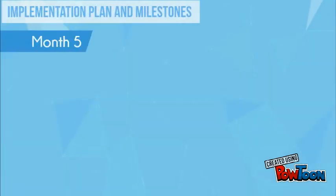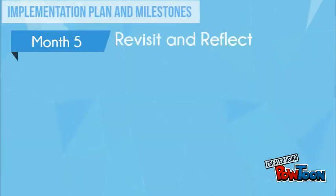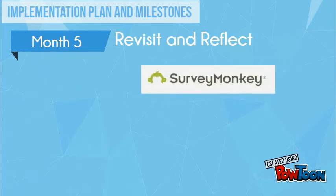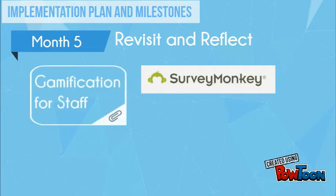In the fifth month we will revisit with the staff to see the outcomes of their DTI process from earlier in the implementation. Feedback from staff will be done through SurveyMonkey. We believe that gamification of the process will accelerate the active participation of the laggards, early majority and subsequent groups.